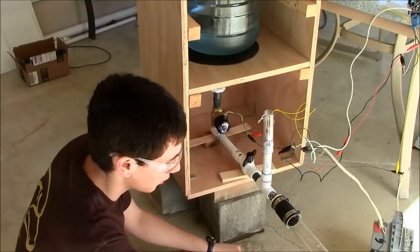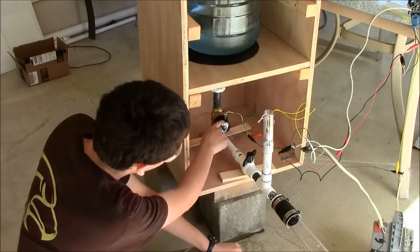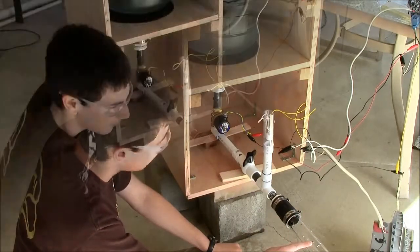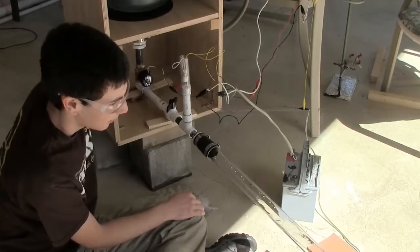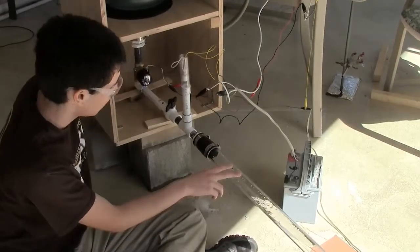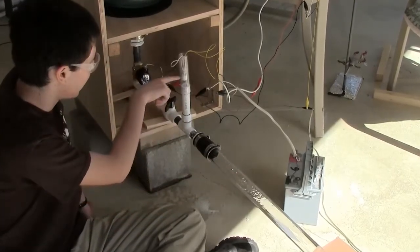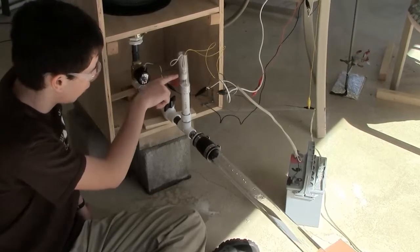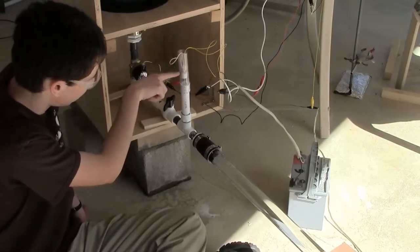After the tube has done draining, this valve here opens, and the tube will fill. The filling process is terminated by this float switch, which will trip when the water level reaches here.